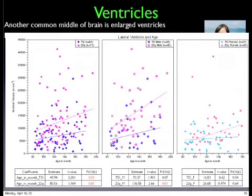Another finding Michelle will show: the ventricles — those fluid-filled spaces — show that the pink dots, individual kids with 22Q, have mostly bigger ventricles than typical kids, and some have very large ones. There's a slightly different projection with age in boys and in girls. Are the ones with very big ventricles different in some way? Is that helping us understand some of the variance? These are the things we're pulling together.